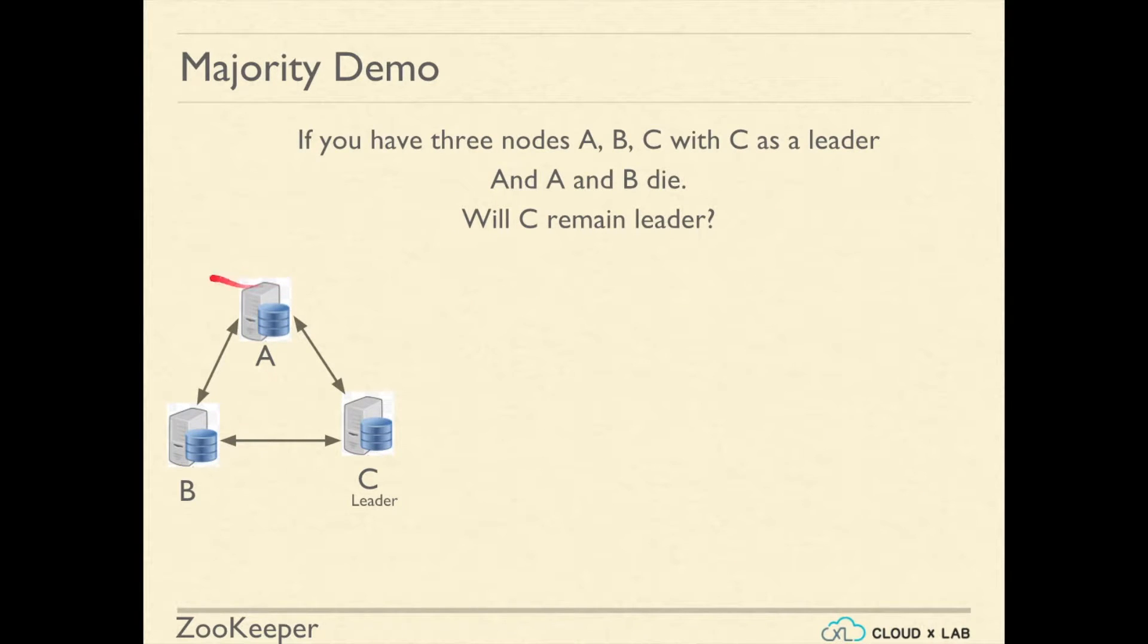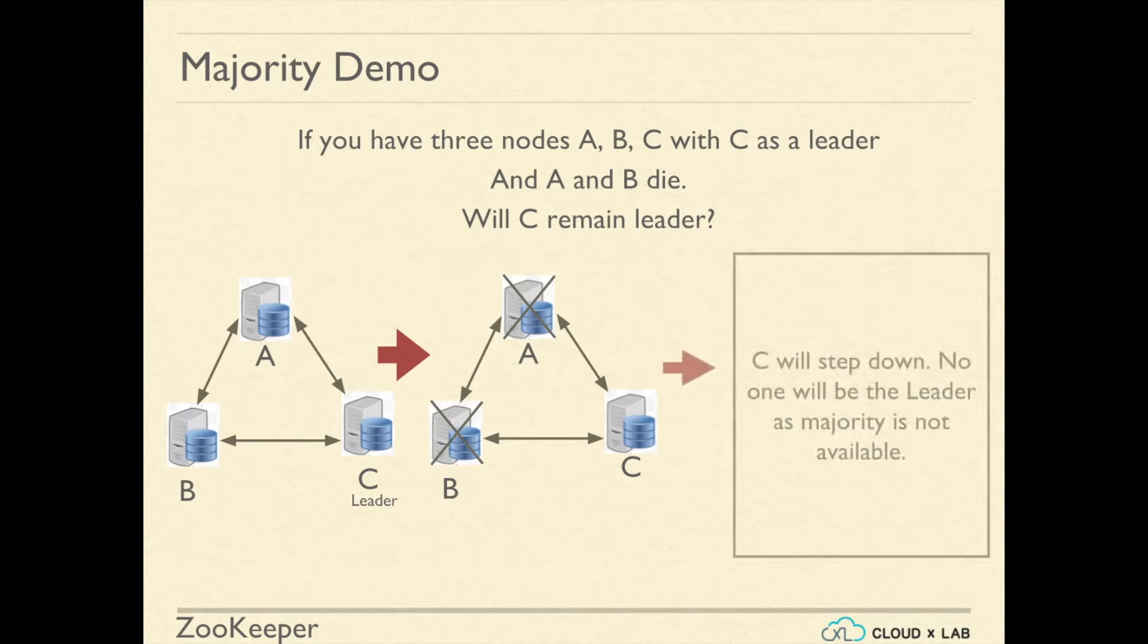If you have three nodes A, B, and C with C being the leader, and after a while A and B both die, will C remain the leader?